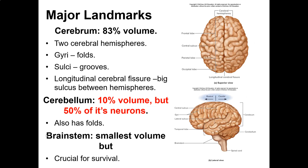Let's review some neuroanatomy. Major landmarks: the cerebrum is 83% of brain volume. The cerebellum is 10% of volume but 50% of its neurons — crazy, right? And the brainstem has the smallest volume but is crucial for survival.